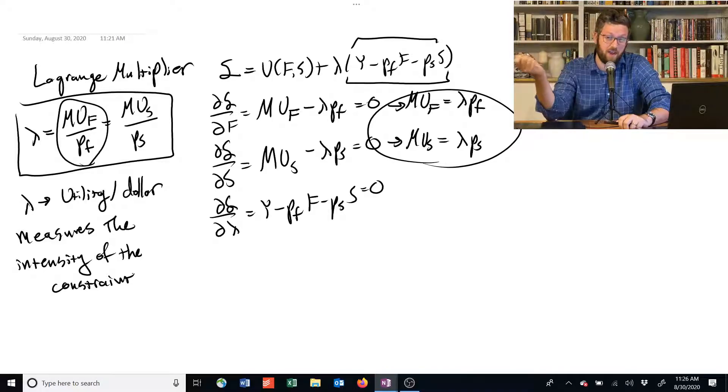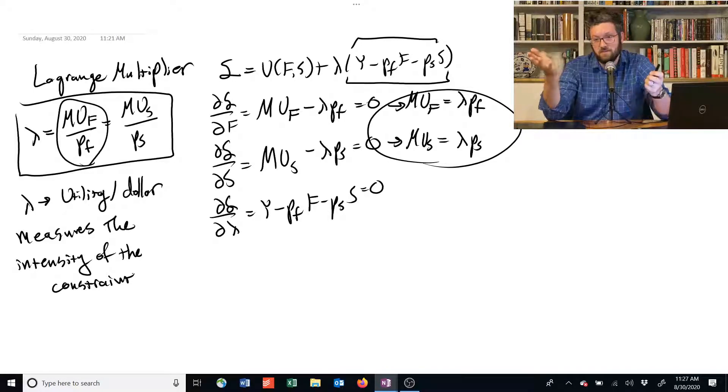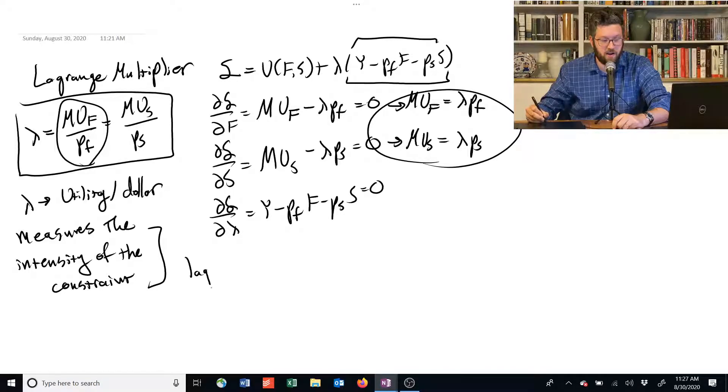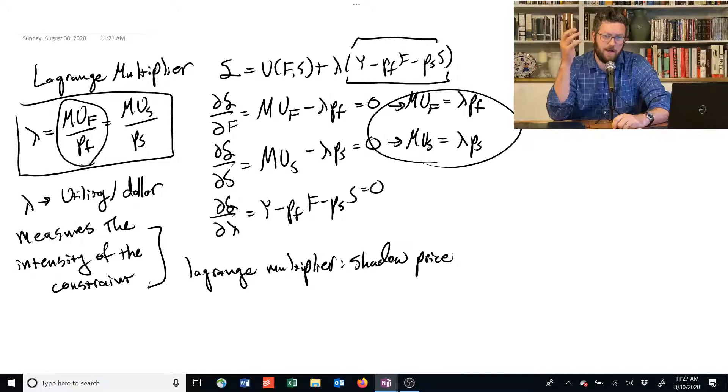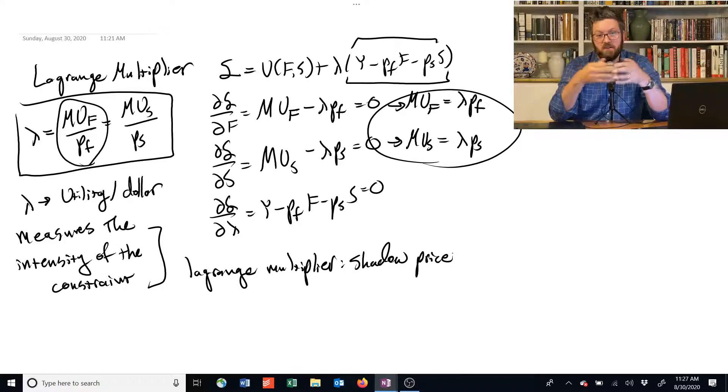We've kind of assumed that that never happens. But remember the Lagrangian is a general tool. It's not only designed for economists trying to maximize utility. And so there are situations where these non-satiation assumptions don't apply. In general, sometimes we call the Lagrange multiplier a shadow price. It's telling us about how this constraint is converting like dollars into utility. And so it's sort of like the utility price, the price of utility in some sense.